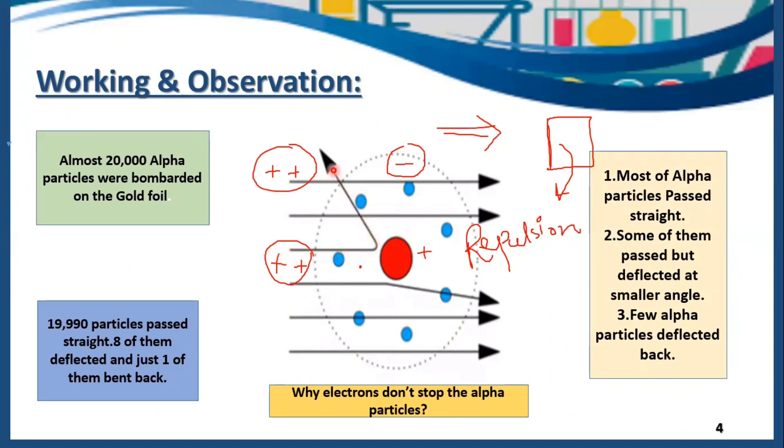The last question is why only one alpha particle deflected back. Because the size of this nucleus is very small as compared to the size of this atom.